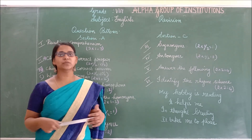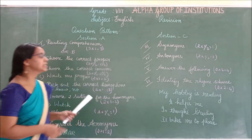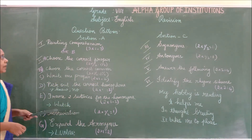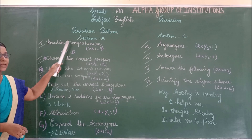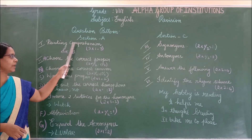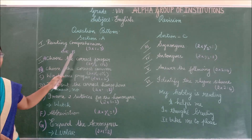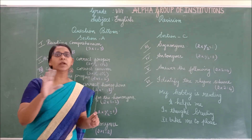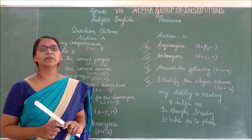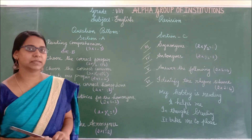Now we are going to write for our unit test 1. This is your question chart. It has Section A, Section B, and Section C. Overall, you will be writing for 25 marks.